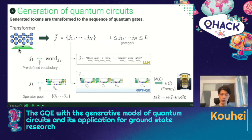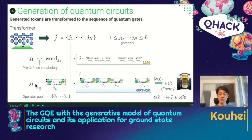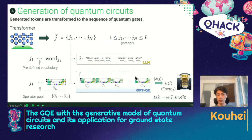In our GPTQE, we utilize a transformer. Transformer generates a sequence of tokens. In the case of a large language model like ChatGPT, each token is mapped to a word using a predefined vocabulary, so the sequence of tokens is mapped to a sequence of words — meaning a sentence. In the case of GPTQE, each token is mapped to a certain circuit component using a predefined operator pool. So the sequence of tokens is mapped to a sequence of circuit components, meaning a quantum circuit. By using this quantum circuit, we can calculate the corresponding energy using a quantum device as an expectation value of an observable Hamiltonian. This is how the transformer generates a quantum circuit.